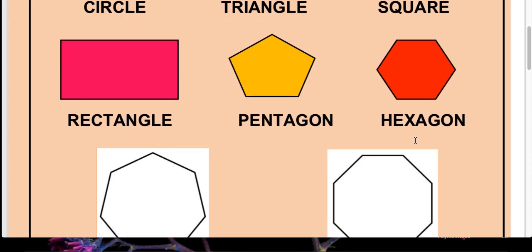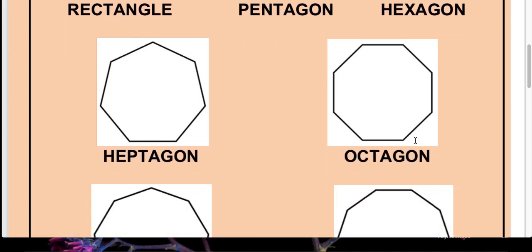Yeh haan tak toh humko thoda bahut pata hai. Now next is the closed figure which is having one, two, three, four, five, six, seven sides. This closed shape with seven sides is known as heptagon. Woh closed shape jiske seven sides hote hai unko hum heptagon bolte hai.